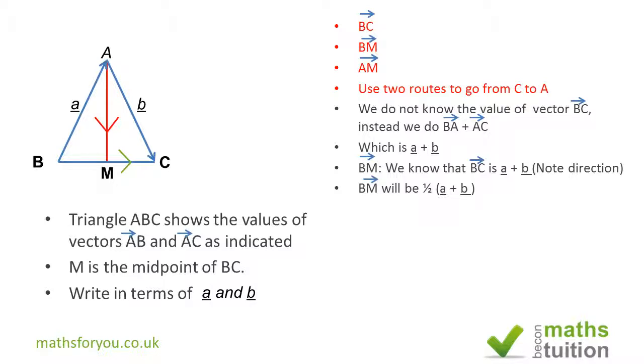Now to find AM, we need to—because we do not know the value of AM directly—go from A to B and from B to M to end up at M. So A to B and B to M there. Because I'm going against the grain as it were here, that becomes minus a, and because I'm going with the grain for BM, that will be plus. So what I have for vector AM will be: I've got minus a there which is going from A to B against the grain, and plus ½(a + b) which is going with the grain there.